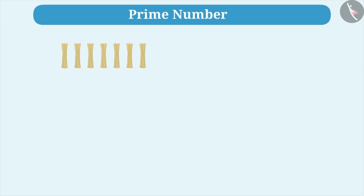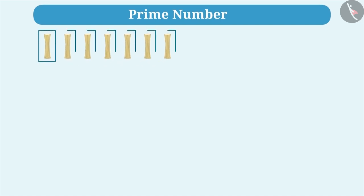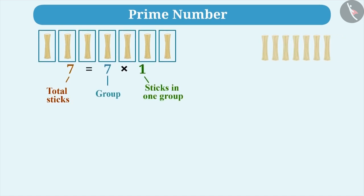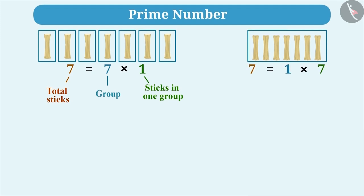Look at this. There are 7 sticks. Can we divide it into equal groups? We can consider 1 stick as a group and 7 such groups can be formed from it, or we can form 1 group of 7 sticks. This is because 7 is only divisible by 1 and 7.